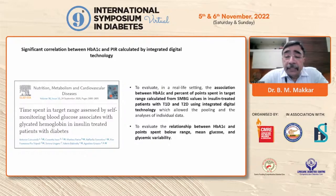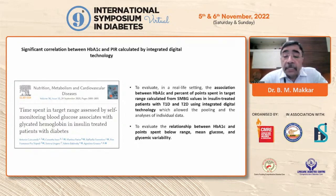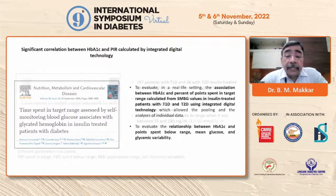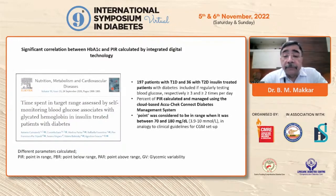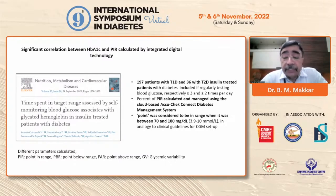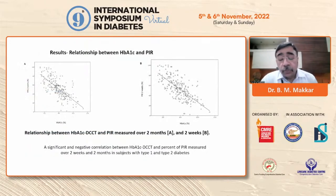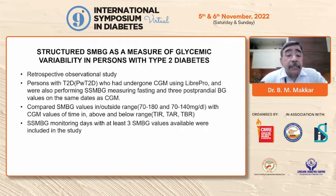A study from Italy by Antonio Catrazola evaluated in a real-life setting the association between A1C and the percentage of points spent in the target range — glucose values within target range picked from SMBG values in insulin-treated type 1 and type 2 patients. The study evaluated the relationship between A1C, mean glucose, and glycemic variability, including 197 type 1 and 36 type 2 diabetes patients. Points were considered in range when between 70 to 180 mg/dL, and the study showed a strong correlation between points in range and two-week and two-month A1C values.